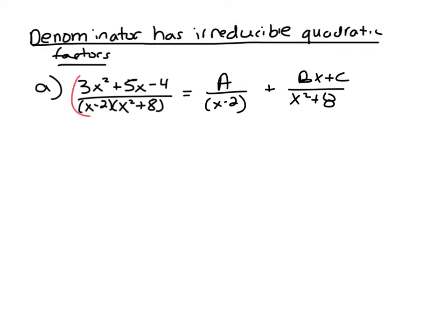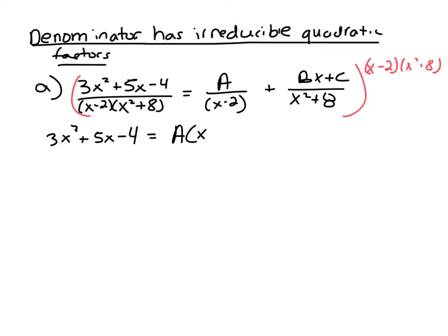All the other steps are pretty much the same as in previous examples. First, you're going to multiply both sides by x minus 2 times x squared plus 8. On the left-hand side, the denominator will cancel, so you'll have 3x squared plus 5x minus 4. On the right-hand side, you'll have a, and the x minus 2 will cancel, leaving x squared plus 8. Then bx plus c, and the x squared plus 8 will cancel, leaving x minus 2.